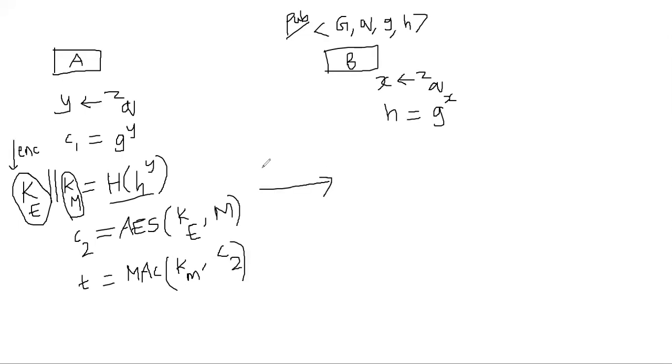Bob is going to get a few things. He's going to get C1. He's going to get C2 and the tag. And now the question for Bob is, of course, he needs to reverse the C2 and extract the message. But in order to do that, he has to first obtain the key. So how is he going to obtain the key?